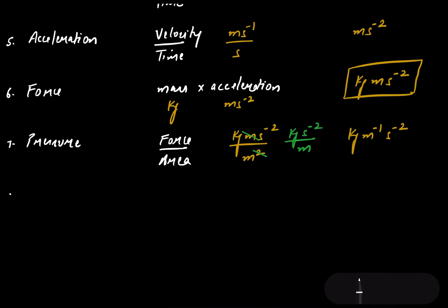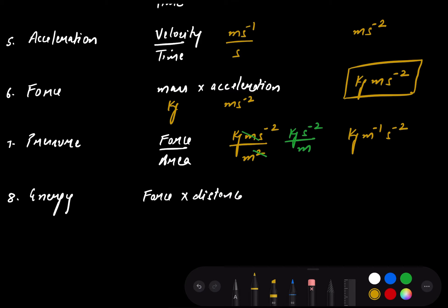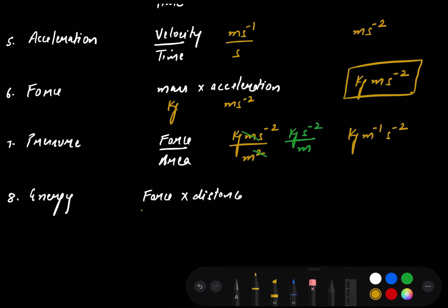The eighth physical quantity is energy. The formula for energy is force into distance. The unit of force is kilogram meters per second square and the unit of distance is meters, so the unit of energy comes out to be kilograms meter square per second square.